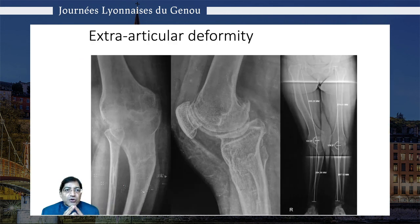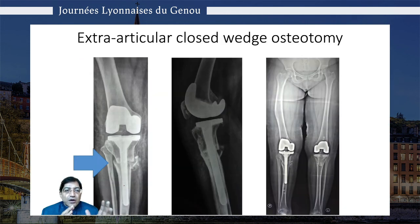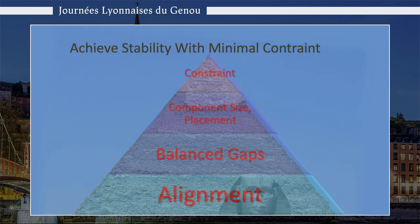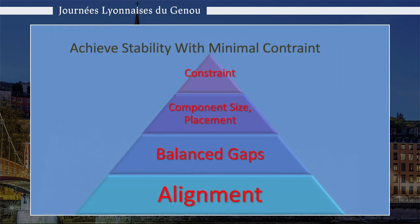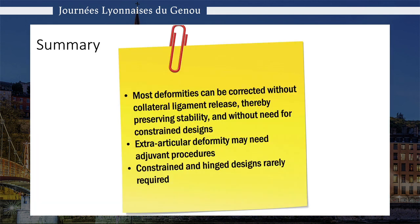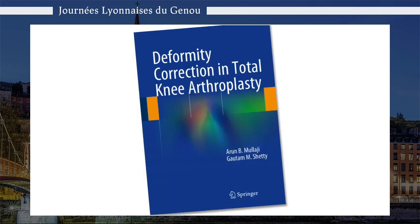This extra-articular deformity was treated with a combination of intra- and extra-articular correction. One can achieve stability with attention to alignment, balancing the gaps, component size and placement, and using constraint only as a last resort. In summary, most deformities can be corrected without releasing the collateral ligament and without more constraint. Thank you for your attention.